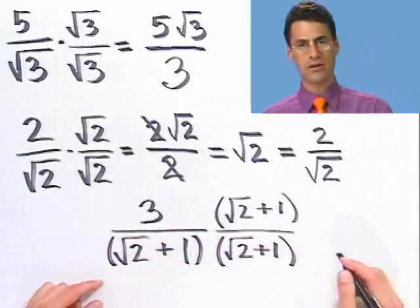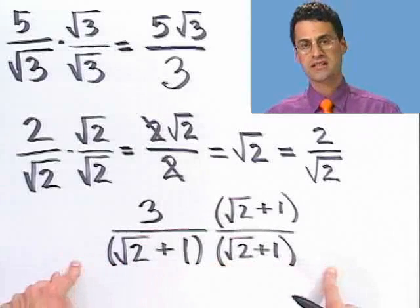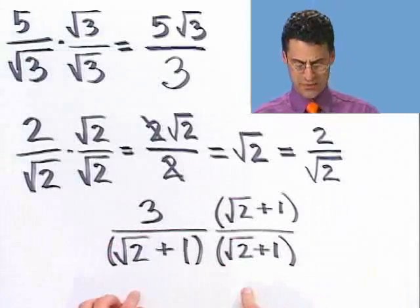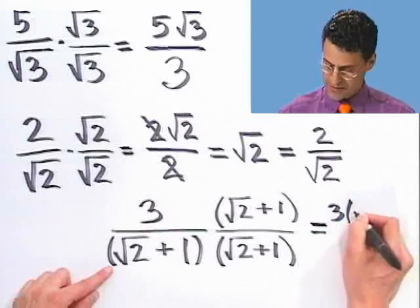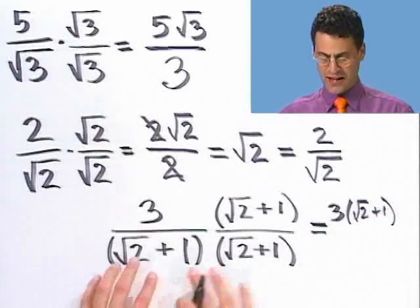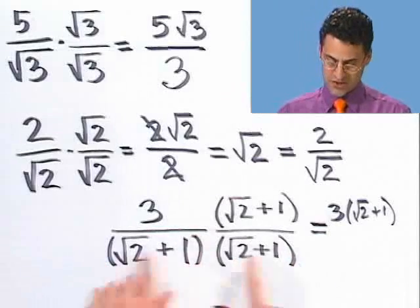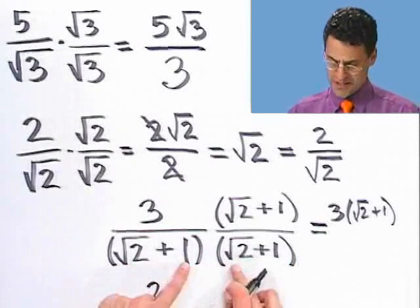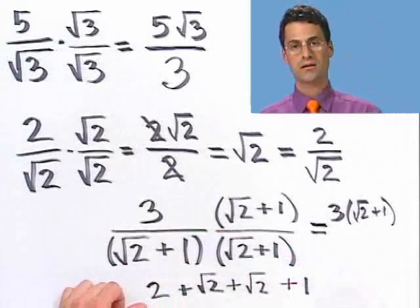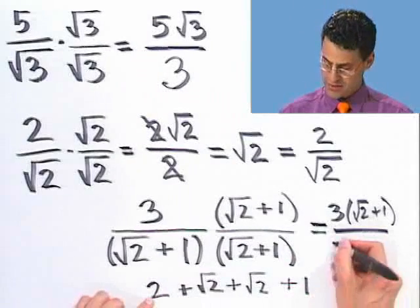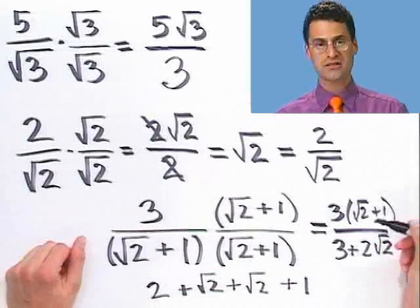If we try this, we're going to see something very unfortunate. When we actually multiply all the bottom stuff out using the FOIL method — first times first, outside terms, inside terms, last terms — square root of two times square root of two is two, the inside terms give plus square root of two, the outside terms give another plus square root of two, and the last term gives a one. So I get two plus one which is three, but unfortunately square root of two plus square root of two is two square roots of two. I actually lost ground because now I have square roots on top and bottom.